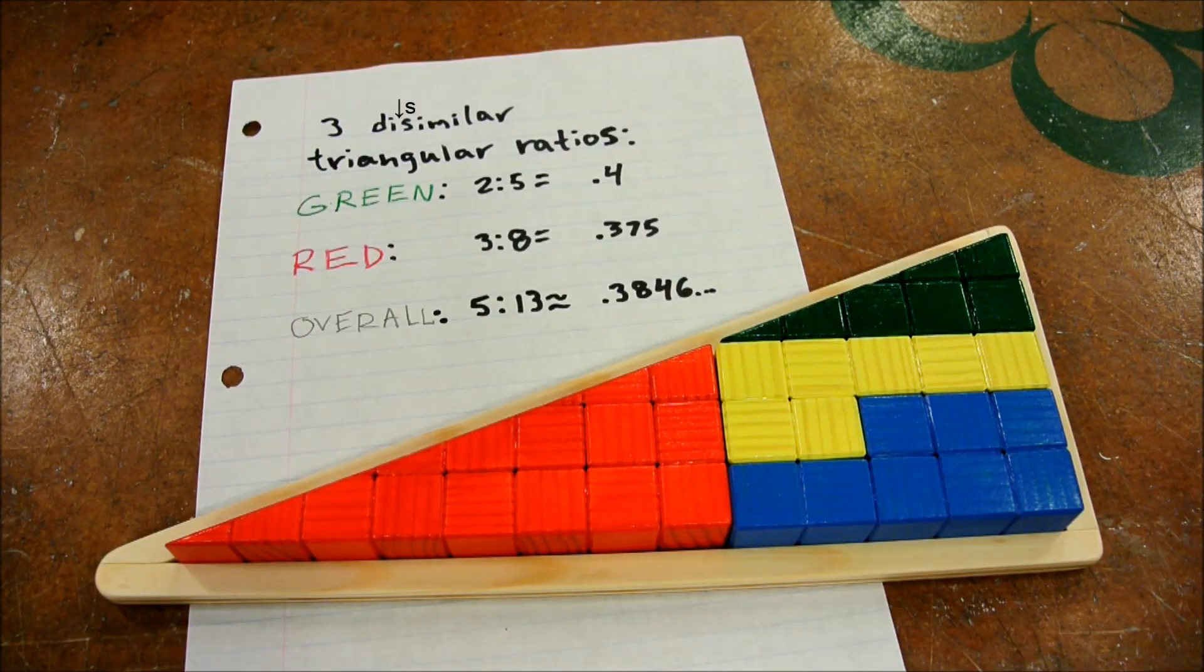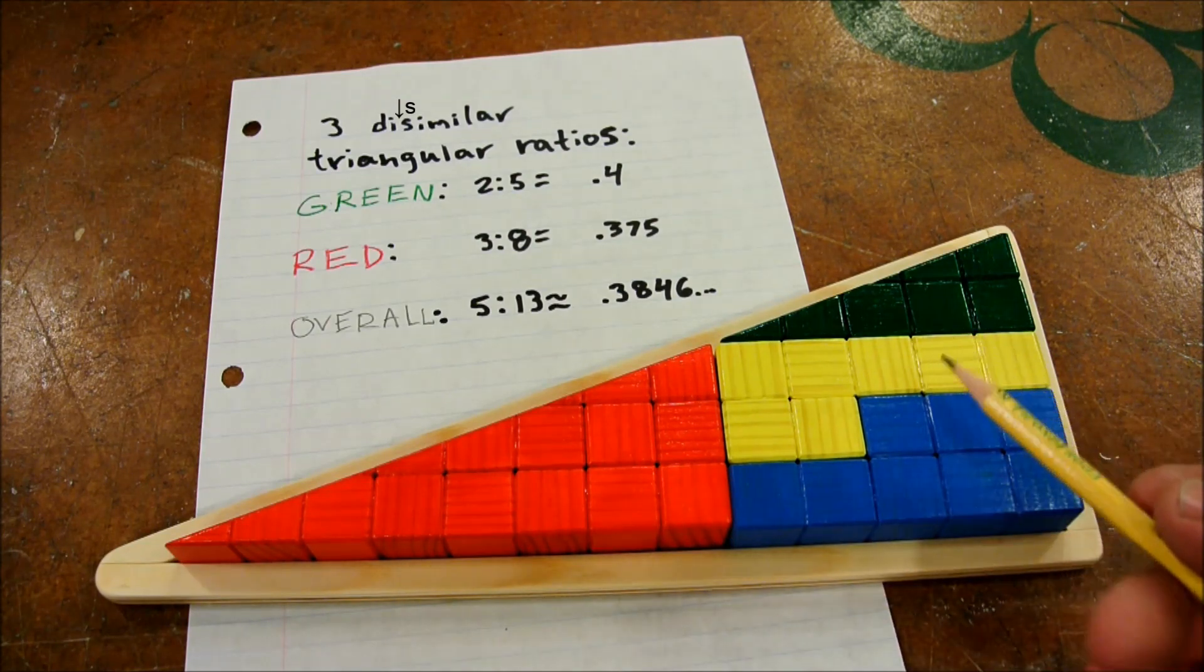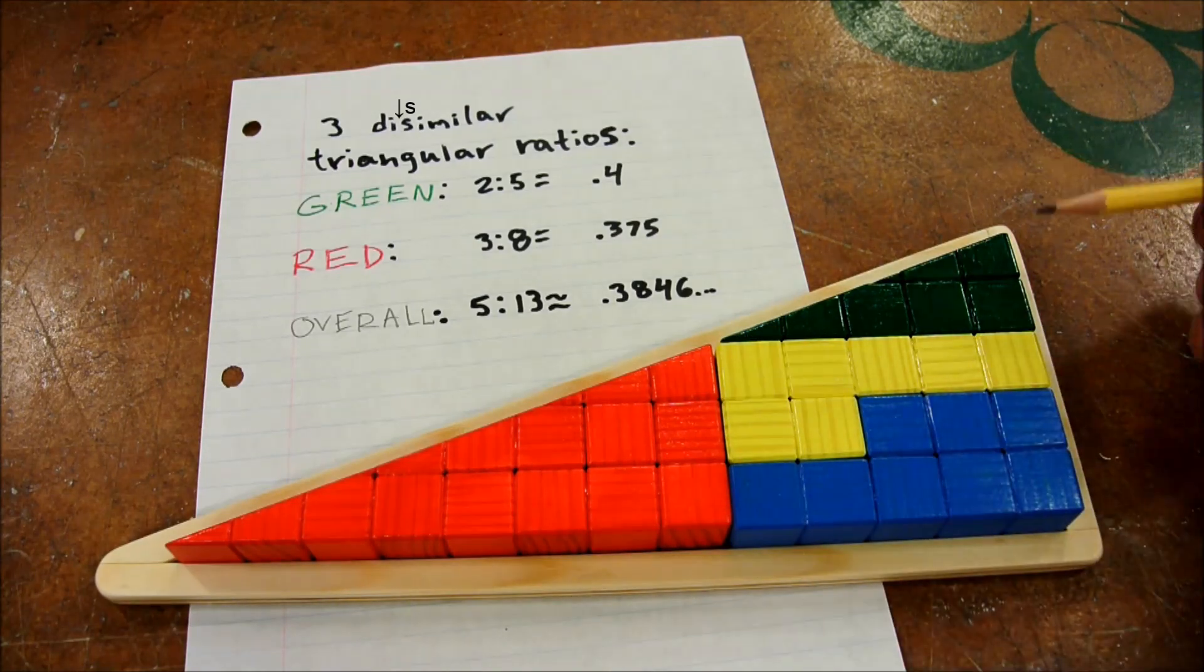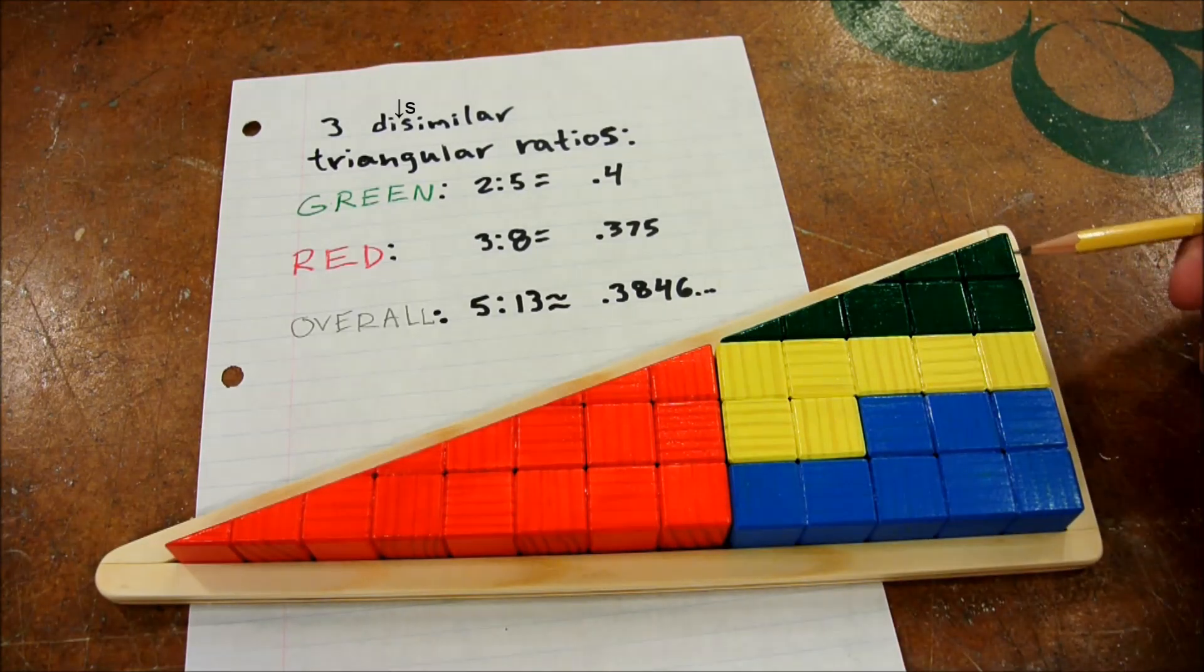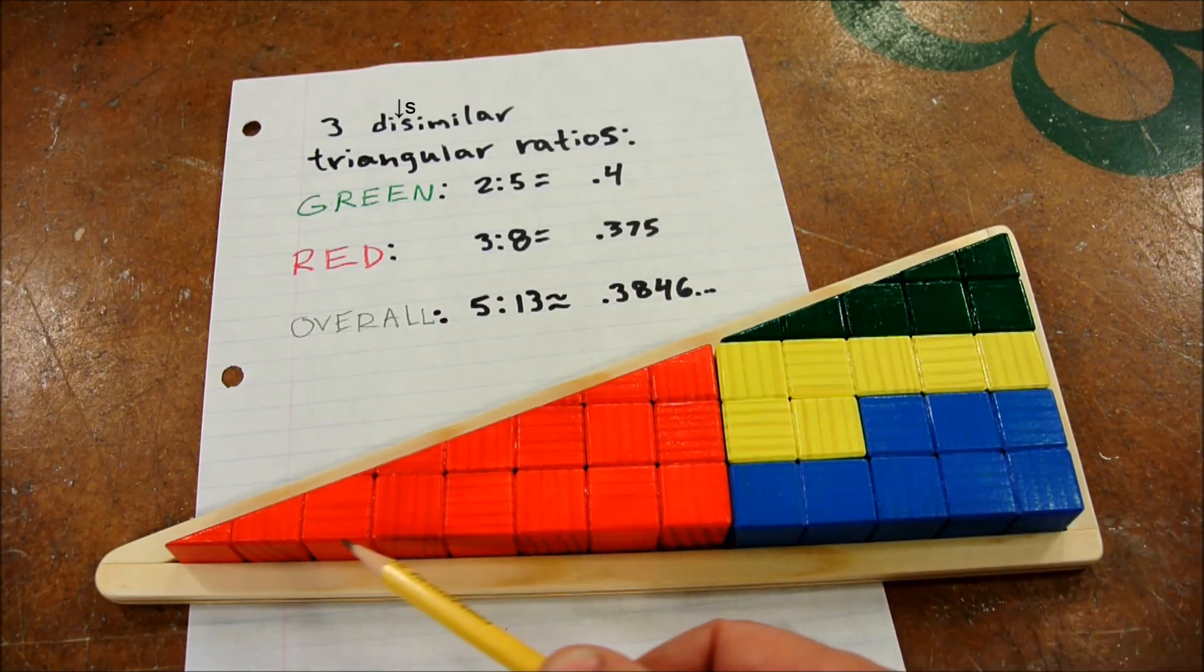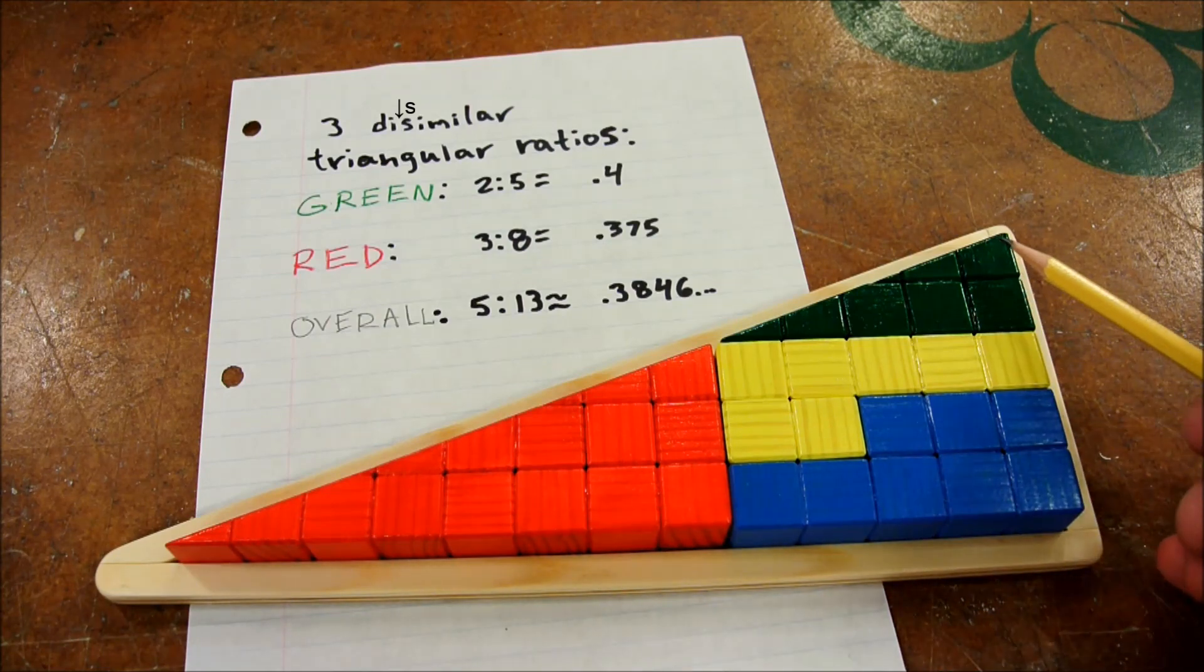So what we're really seeing here are three different types of triangles. The puzzle is a misdirection, because it implies that all three triangles are similar, but they are not. So the three triangles are the green, 2 by 5, the red, 3 by 8, and the overall puzzle, which is 5 by 13.